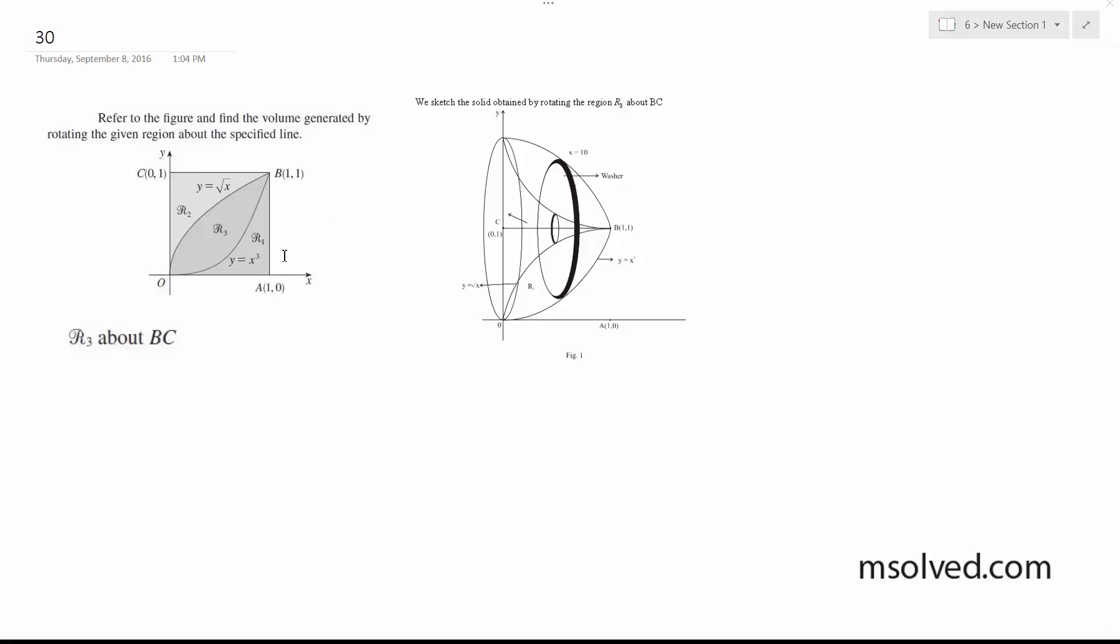Alright, so we want to rotate R3 about BC. BC is right here, so it's going to look something like this.